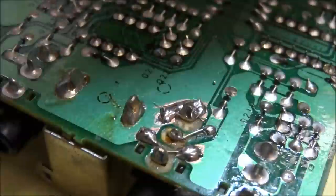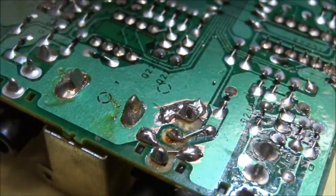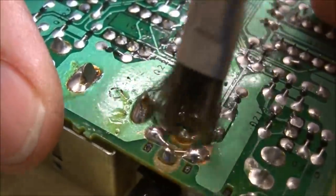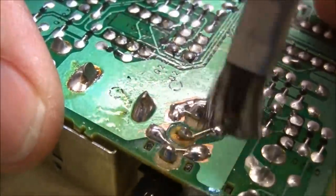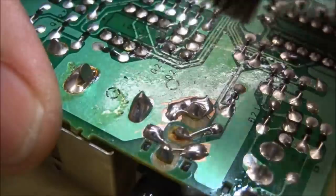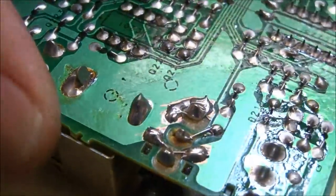Lastly go ahead and clean the flux off the circuit board. Like I said, I like to use a little bit of acetone to do it, I think it works out very well. No contamination after that. There we go.